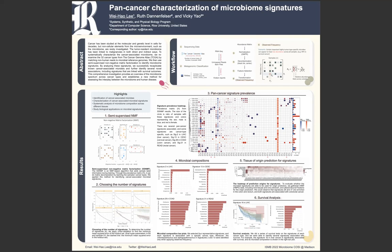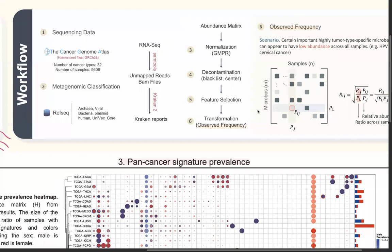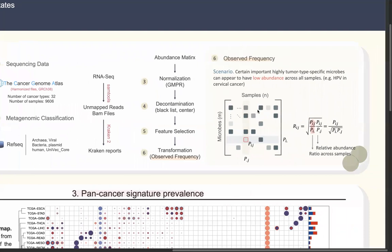So identification of those microbes becomes an important task for this field. In this study, we use RNA sequencing data from the Cancer Genome Atlas, remove the human reads, and use the unmapped reads for metagenomic classification. We then obtain the microbial composition matrix and apply serious data processing, including normalization, decontamination, feature selection, and transformation.